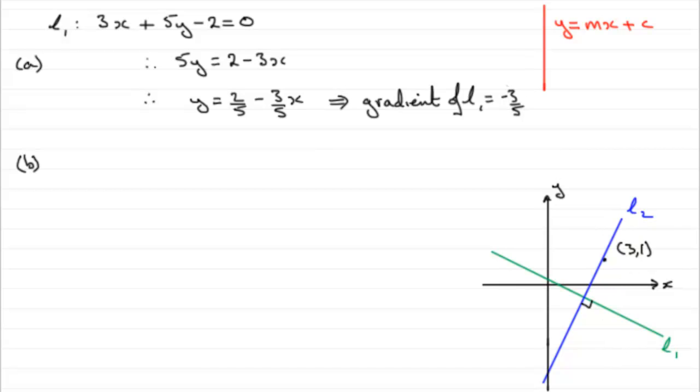Now any line, the blue line in particular, has the form y minus y1 equals m bracket x minus x1. We should be familiar with that form of a straight line. x1, y1 is a point on the line, and we've got that already. We've got 3, 1. x1 is the 3, y1 is the 1. m is the gradient of this line, and that's what we're missing at the moment.